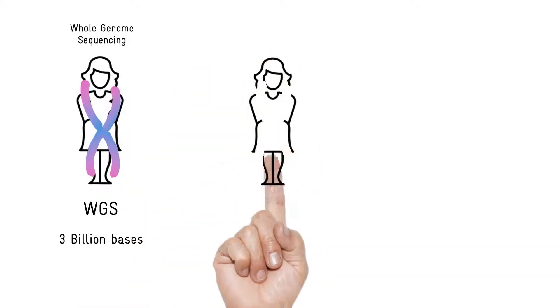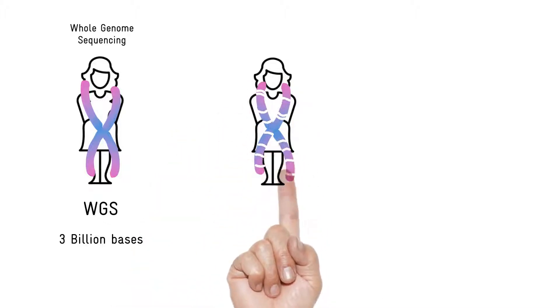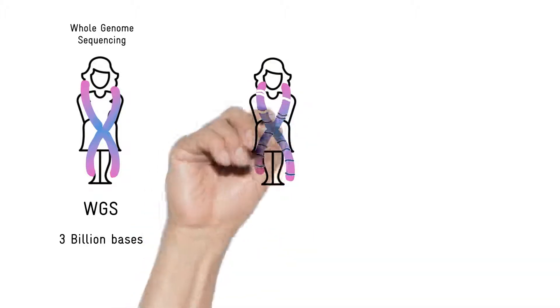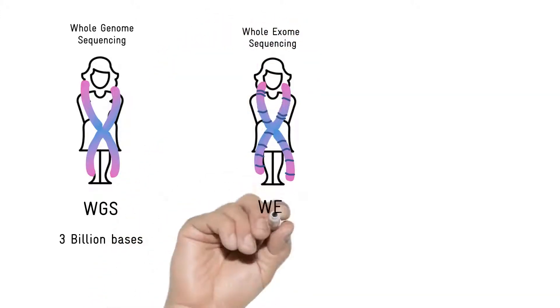Often, it's useful to be more targeted. For example, you might not want the sequence of the whole genome. Instead, you may just want the sequence of the exons, the bits that actually encode for protein. This is called whole exome sequencing, or WES.